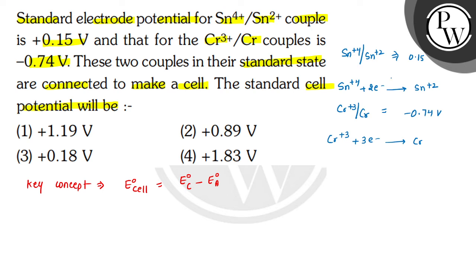We can write that the cathode is present for tin. So for this, the value is 0.15 minus anode.